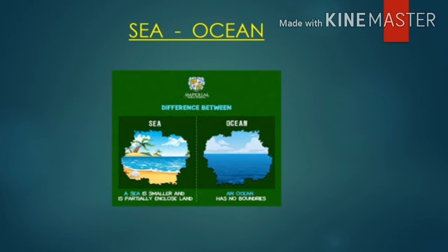One more word to note is 'sea.' The sea is often used interchangeably with ocean, but strictly speaking, a sea is a body of saline water partly or fully enclosed by land. A sea is a smaller area compared to an ocean and it is partially enclosed by land, whereas an ocean has no boundaries and is very large.